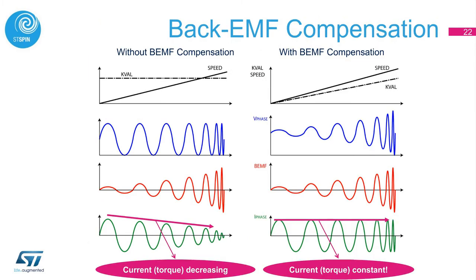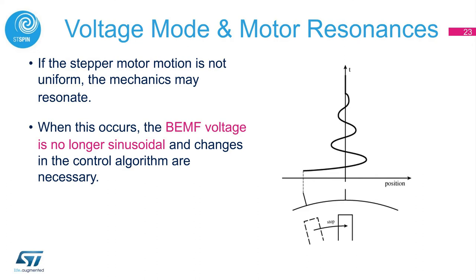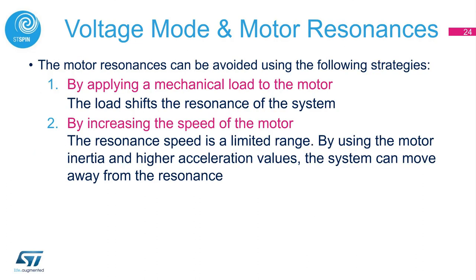With no back EMF compensation, the net voltage in the phases would be quickly reduced to zero and hence no current would flow — the motor would have zero torque and stall. Thanks to the back EMF compensation, the current is stable and the torque is constant. Stepper motor motion is not uniform and this behavior can make the mechanics resonate. When this occurs, the back EMF voltage is no longer sinusoidal, which causes issues in the control algorithm. Strategies to avoid motor resonances include applying a mechanical load to shift the resonance, or increasing the motor speed using motor inertia and higher acceleration to move away from resonance.